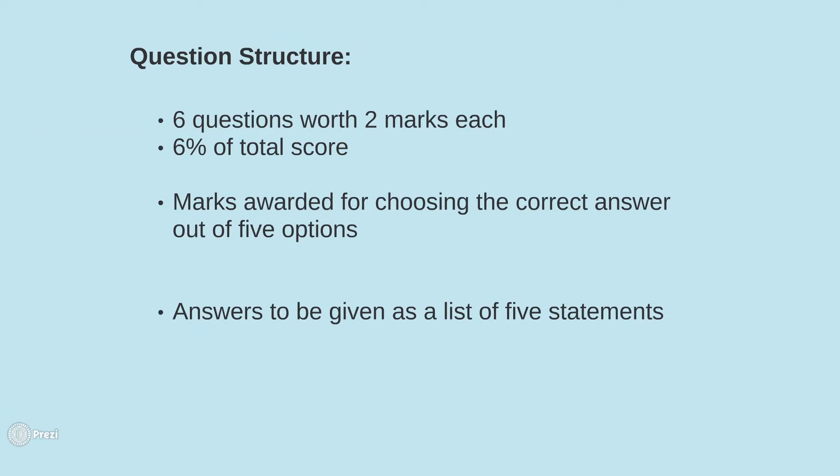Within the PSA, this section is worth 12 marks. There are 6 providing information questions within the PSA, each worth 2 marks. In each question you will select 1 out of 5 options, and the 4 other options are distractor answers.